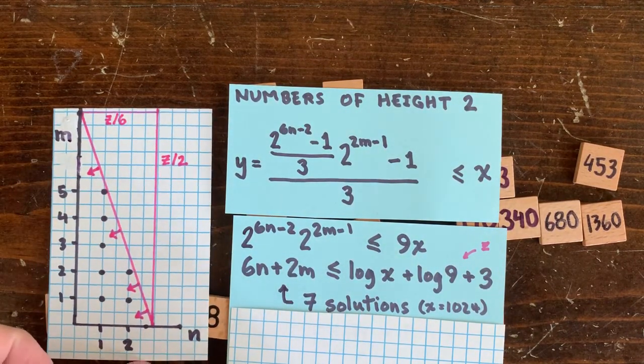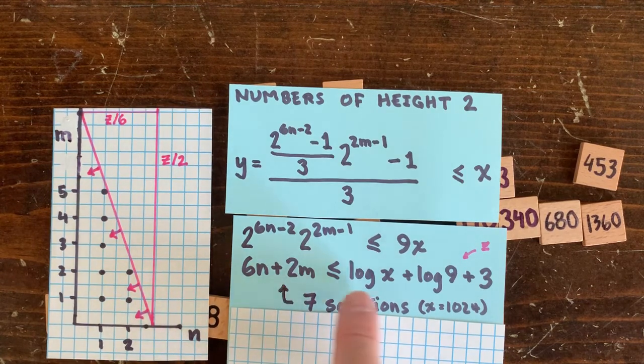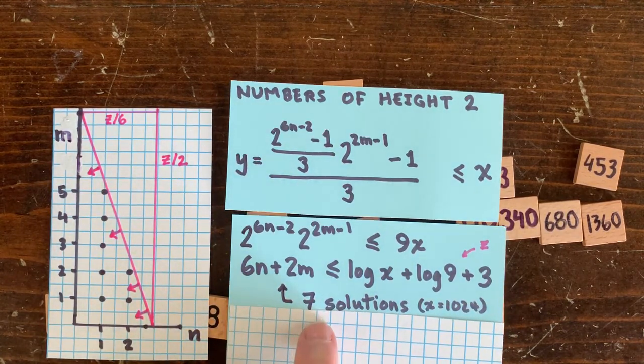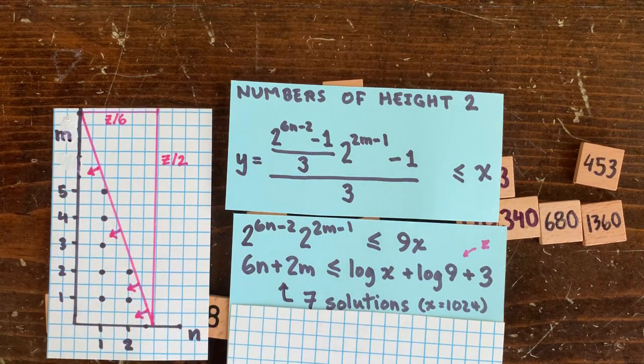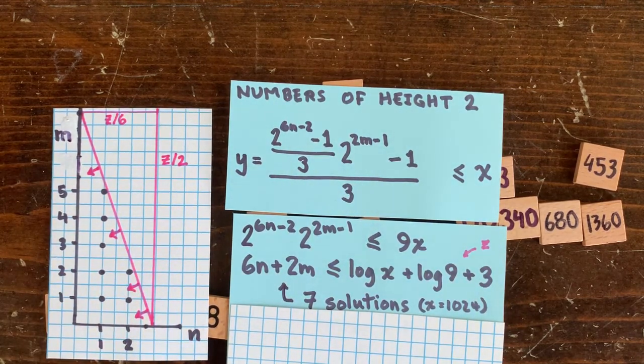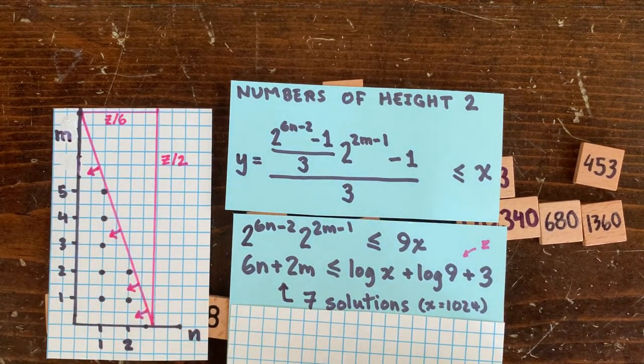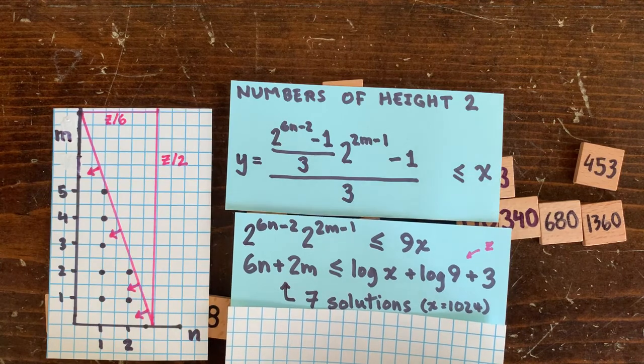So how many combinations of integers n and m satisfy that? That is, how many paths through this tree wind up with some y that's less than x? It looks like it's going to be half this rectangle, or this squared over 2 times 6 times 2. And if x equals 1024, we would predict that 7 paths will result in a y less than x.